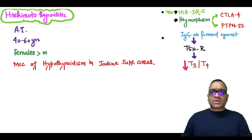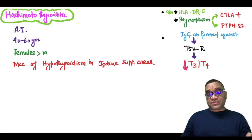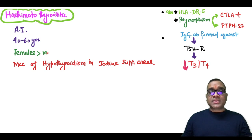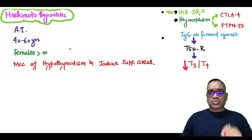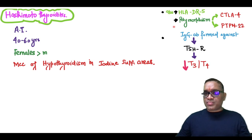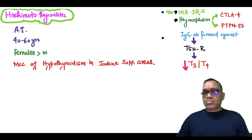It is the most common cause of hypothyroidism in iodine-sufficient areas. Being an autoimmune disorder, it has association with two important genes: HLA-DR5 and polymorphism of CTLA-4 and PTPN-22.